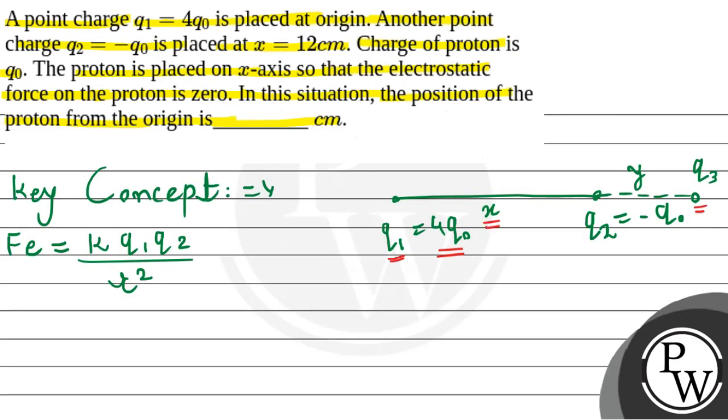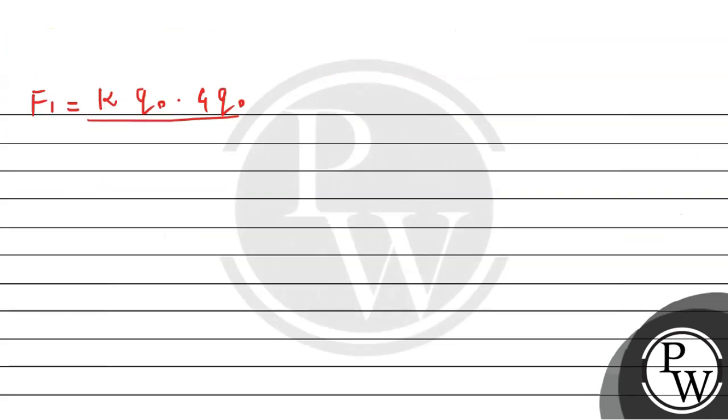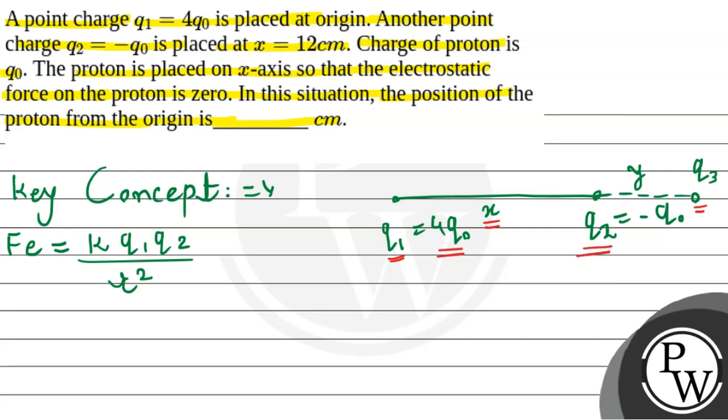X का मान हमें दे रखा था 12 cm, but हमें total distance देखना है, so यह simply हो जाएगा X plus Y का whole square. उस तरीके से F2 हम निकाल लेंगे, जो के होगी force due to this Q2.